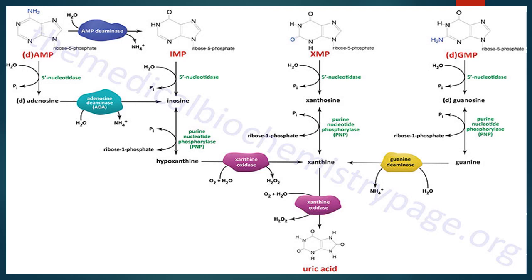The amino group either from AMP or adenosine can be removed to produce IMP or inosine respectively. Inosine and guanosine are respectively converted to hypoxanthine and guanine by purine nucleoside phosphorylase enzyme. Guanine undergoes deamination by guanase to form xanthine. Xanthine oxidase is an important enzyme that converts hypoxanthine to xanthine, and xanthine to uric acid. Thus, uric acid is the final compound of purine metabolism.